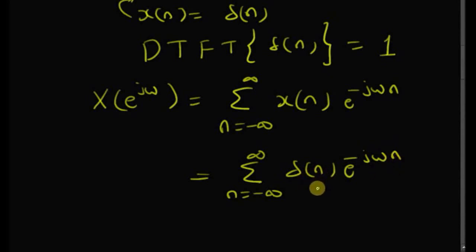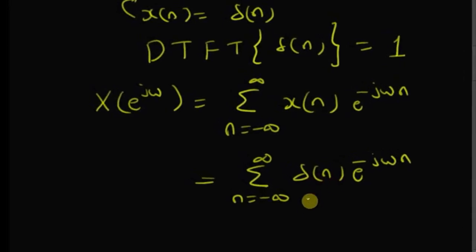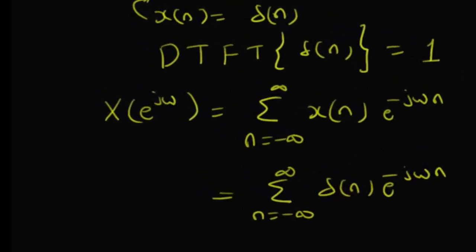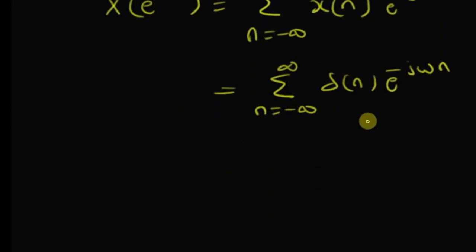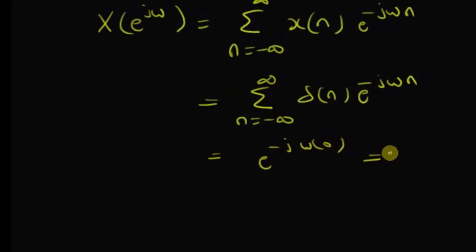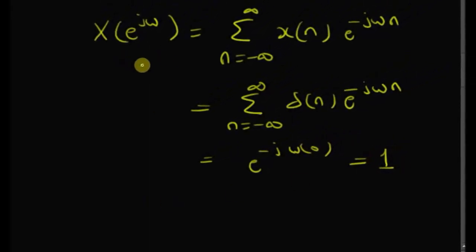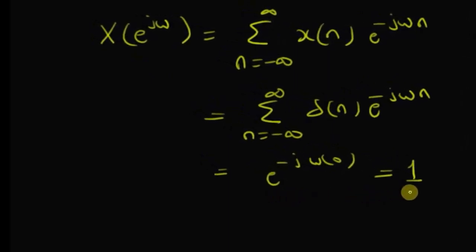However, δ(n) is the unit impulse, which means it is equal to one for n = 0 and zero elsewhere. So this summation is equal to e^(−jω·0), which is clearly equal to one. Therefore, the DTFT of the unit impulse signal is equal to one.